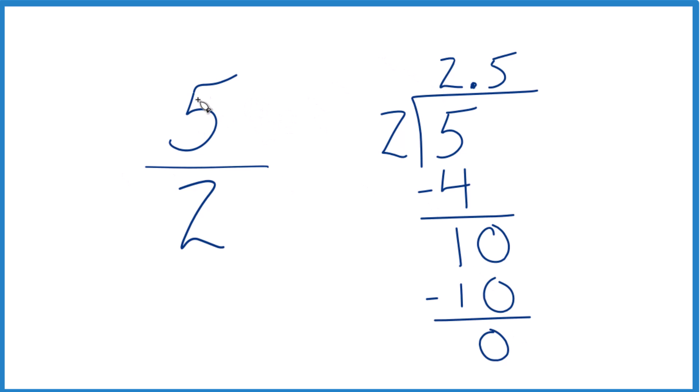So in answer to our question, the fraction 5 seconds, that equals the decimal 2.5. These are the same thing, just written differently, same value. That's it.